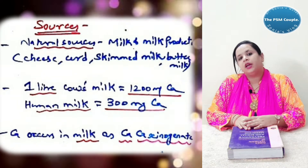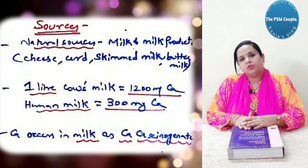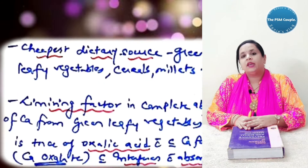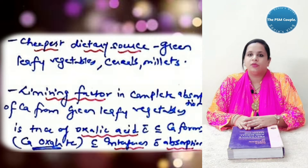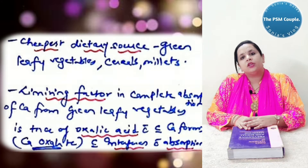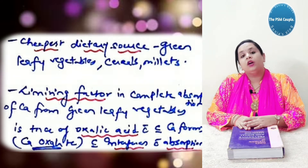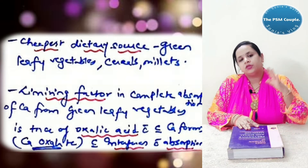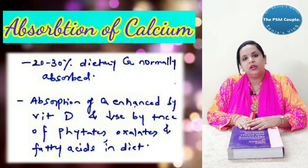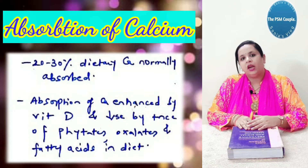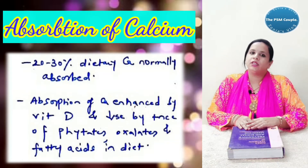The most natural source for calcium is milk and milk products. One litre of cow's milk contains 1200 milligram of calcium, and human milk contains 300 milligram. Calcium occurs in milk as calcium caseinogen. The cheapest dietary source is green leafy vegetables, cereals and millets. The limiting factor in complete absorption from green leafy vegetables is the presence of oxalic acid, which forms calcium oxalate and interferes with absorption. Normally 20 to 30% of dietary calcium is absorbed. Absorption increases with vitamin D and decreases with presence of phytates, oxalates and fatty acids in the diet.